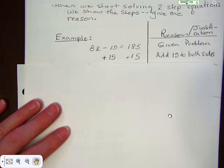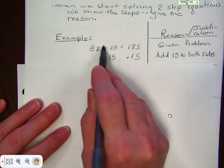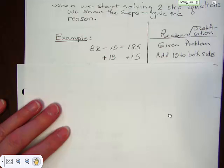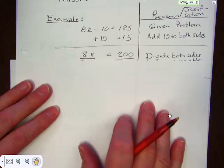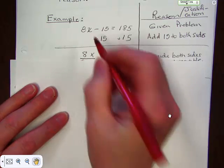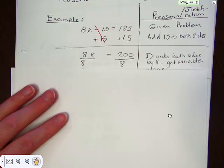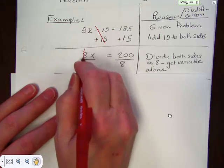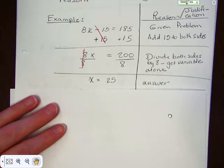We're going to add 15 to both sides. This is a minus 15, so we'll add 15 here and add 15 there. When we add 15 to both sides, we end up with 8x equals 200, because when we add 15 there, that goes away. Now that we have 8x equals 200, we need to divide both sides by 8, because we want to get the variable alone. When we do that, this becomes that well-chosen one. We take 200 and divide it by 8 and it becomes 25.